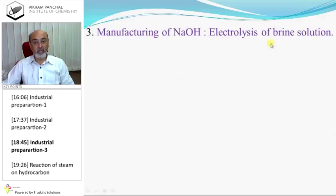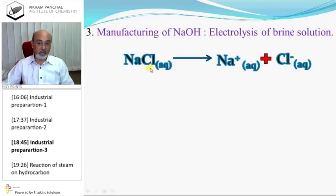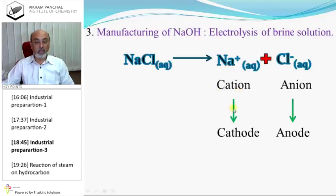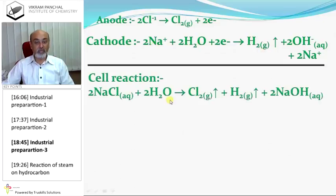Manufacturing of NaOH by electrolysis of brine solution: aqueous NaCl ionizes to give Na⁺ and Cl⁻. Cations transfer to cathode and anions to anode. At the anode, chloride ions are oxidized to release chlorine gas. At the cathode, sodium is not reduced, so water is reduced releasing hydrogen gas. Net result: chlorine gas at anode, hydrogen gas at cathode, and the aqueous solution becomes basic.